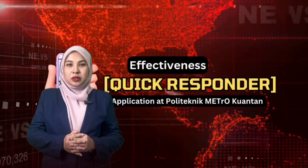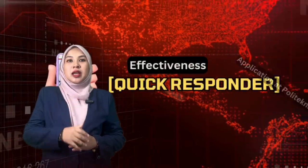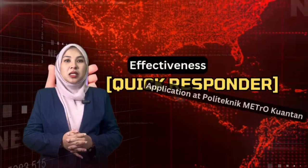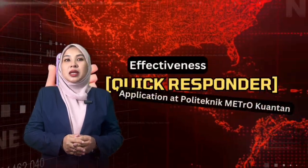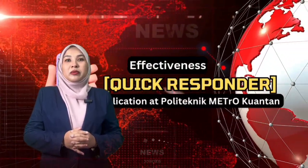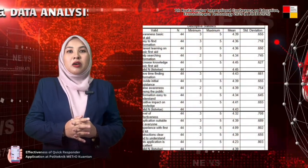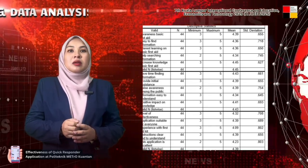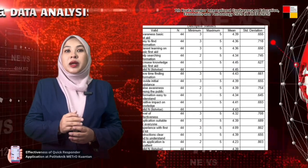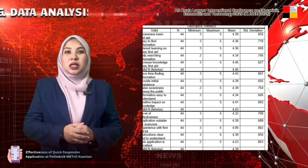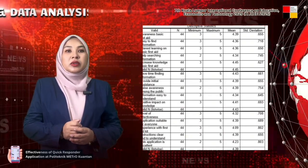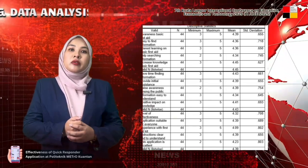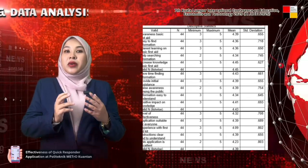Here are the key insights from the survey responses, divided into three attributes: knowledge improvement, efficiency and usability, and implementation and practicality. For knowledge improvement, the highest rated response was 4.45 for 'This app increases your knowledge of first aid.' For efficiency and usability, 4.43 was given to 'This app helps me save time when finding first aid information.' For implementation and practicality, 4.39 was given to 'The app is suitable for everyone and the instructions are clear and easy to understand.' These results confirmed that QuickResponder is well received, effective and valuable for the community.